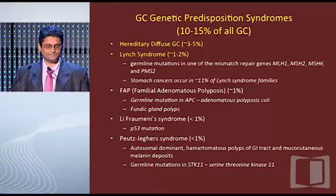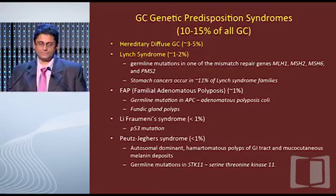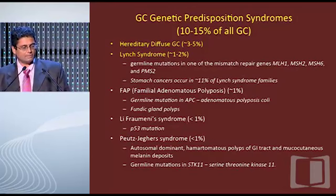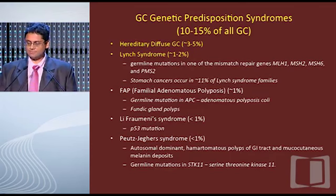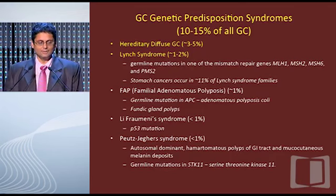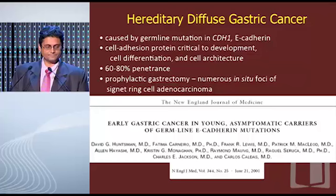Tobacco use confers a risk of about 2, and family history has a significant risk of about 3.67. We heard about the importance of hereditary diffuse gastric cancer and CDH1 mutations. This is a list of the most common hereditary syndromes associated with gastric cancer. Hereditary diffuse gastric cancer comprises about 3 to 5 percent, which is about a third of all genetic predisposition syndromes. Lynch syndrome is associated with increased gastric cancer — about 10 percent of Lynch families have it. FAP with APC mutation confers a tenfold risk. Li-Fraumeni syndrome and Peutz-Jeghers syndrome as well.